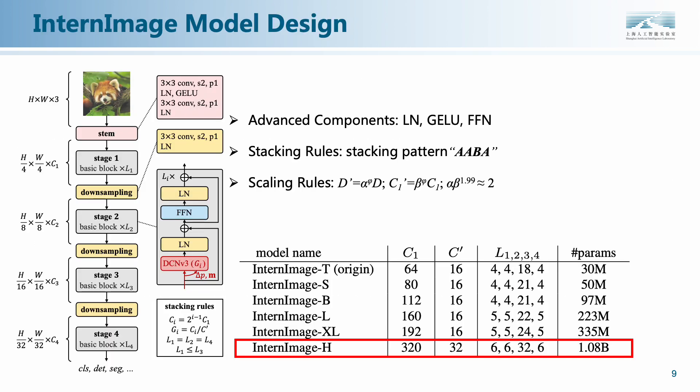As to the architectural design, the left figure provides a detailed illustration. In general, there are three levels. At the block level, we add some advanced components, including LN, GELU, and FFN. At the model level, we refer to SWIN's rules and stack the blocks in an A-A-B-A pattern. Finally, the scaling rules, inspired by EfficientNet, we consider two scaling dimensions, depth D and width C1, and scale both dimensions using alpha, beta and the composite factor phi. The right figure verifies the validity of our scaling rule. Finally, we achieve model scaling in six dimensions and make the CNN model break through the model size of 1B for the first time.